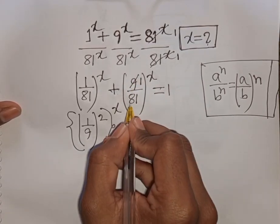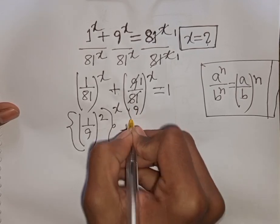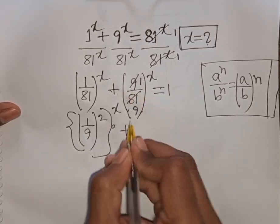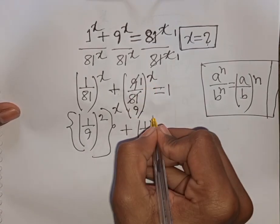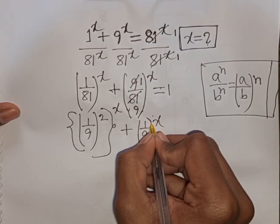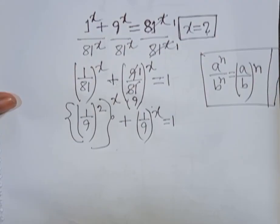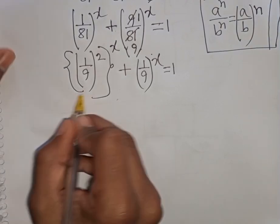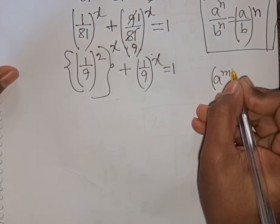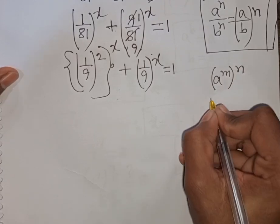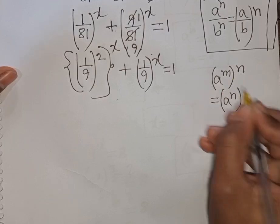9 divided by 9 is 1, and 81 divided by 9 is 9, so we have (1/9)^2x plus (1/9)^x equals 1. Now applying the exponential rule that (a^m)^n equals (a^n)^m, we can rewrite the first term.